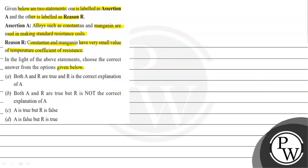Option A: both A and R are true and R is the correct explanation of A. Option B: both A and R are true but R is not the correct explanation of A. Option C: A is true but R is false. Option D: A is false but R is true.